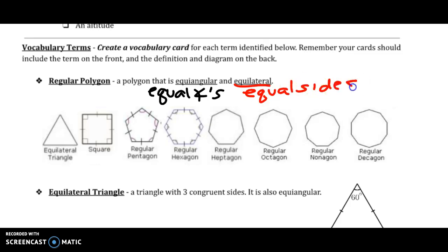So in a regular figure, all sides and angles are congruent. The three-sided figure is an equilateral triangle, and all the angles do measure the same. We'll talk more about that figure in the next vocabulary term.